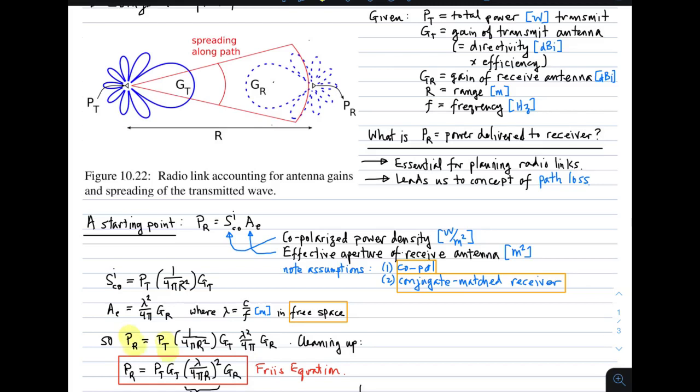So putting that together, we have the receive power is equal to the transmit power, divided by this factor that describes spreading in a spherical wave, times the transmit gain, times wavelength squared, divided by 4 pi, times the receive gain. And that's really the answer. But typically we clean this up a little bit, because we have some repeated factors here. And that gives us the Friis equation.